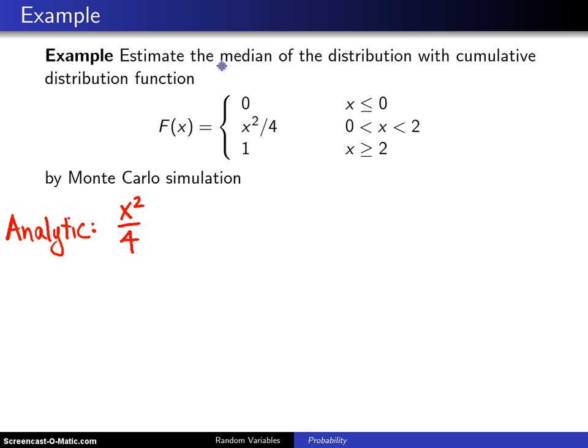and because it's the population median, that is half the area under the probability density function is one half to the left of the median, and the area to the right of the median is also one half, so we can take that x squared over 4 and set it equal to one half.